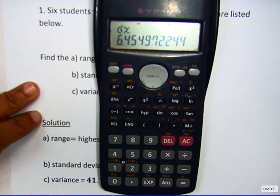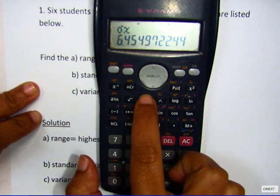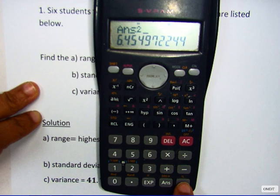To find the variance, all we need to do is square the standard deviation. So we press square on the answer, which equals 41.67.